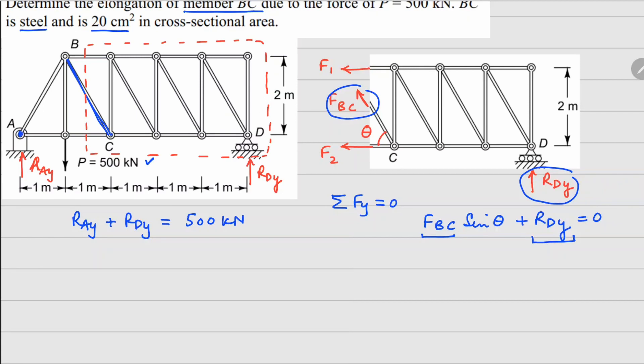We can take moment about point A. So 500 kilonewtons with a distance of 1 meter is going to balance your rdy into total distance of 1, 2, 3, 4, 5 meters.